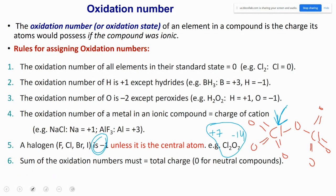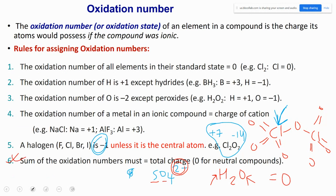Rule 6: the sum of oxidation numbers must equal the total charge of the compound. For SO4²⁻, the sum must equal −2. For water, the sum must equal zero. Also remember: an increase in oxidation number is oxidation; a decrease in oxidation number is reduction.